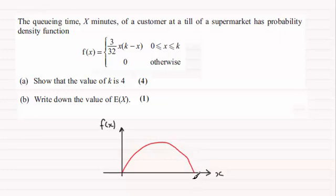I've not drawn it particularly well but hopefully it gives you an idea, and we're told that it's 0 otherwise so the graph would look like that.